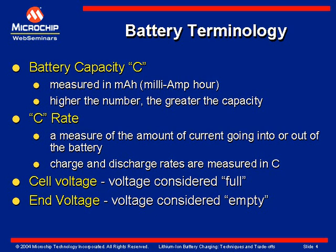If you're going to draw a thousand milliamps out of a thousand milliamp hour battery, you probably could not run for one hour. The reason is there are some inefficiencies while you're discharging the battery. The one C-rate is defined as the milliamps equal to one milliamp hour. So a thousand milliamp hour battery will have a C-rate of a thousand milliamps.